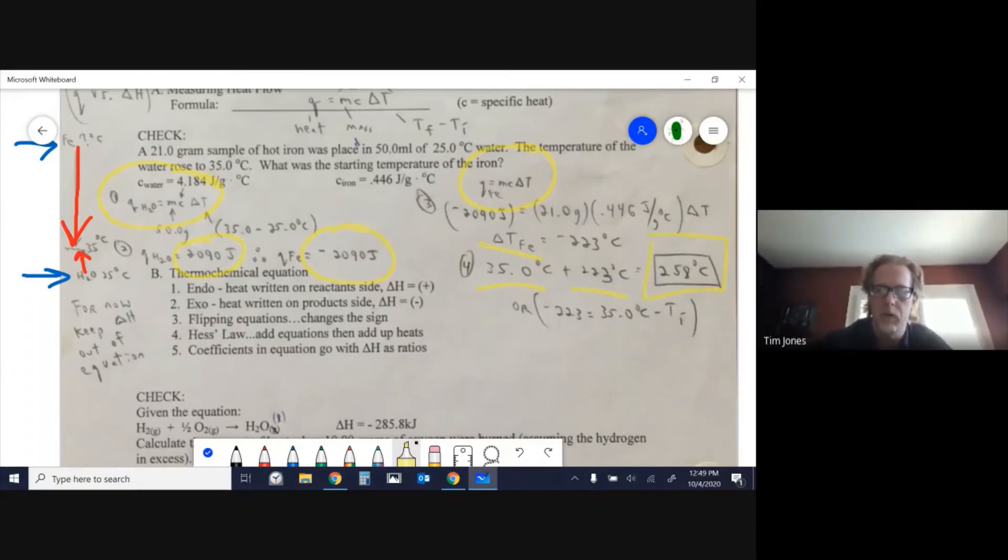If it ends at 35 and cooled down 223, I just add the two together to get 258. You can also use the definition of delta t, which I've done right here, and you get the same answer either way. I think using common sense is easiest.